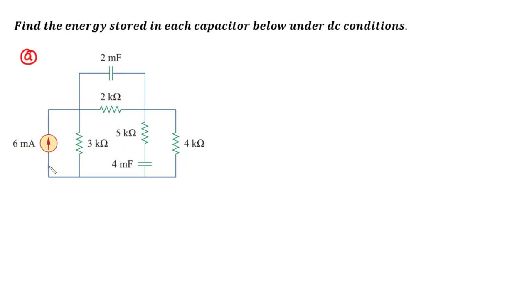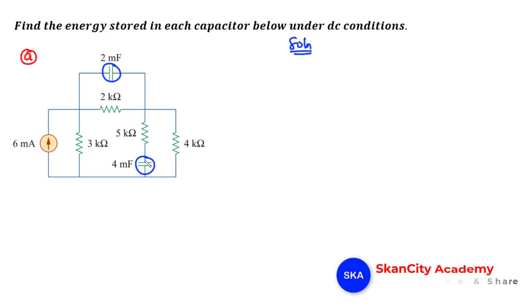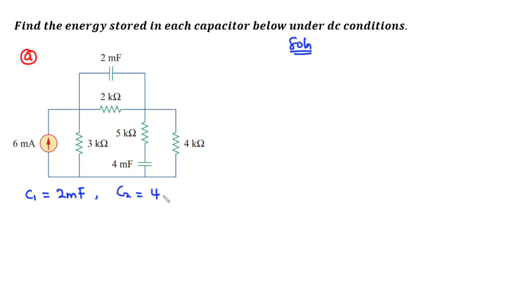Here we have a circuit which is made up of a six milliampere current source, and then we have resistances and capacitors connected in the circuit. We are asked to find the energy stored in each capacitor under DC conditions. We have two capacitors: C1 is equal to two millifarads and C2 is equal to four millifarads.